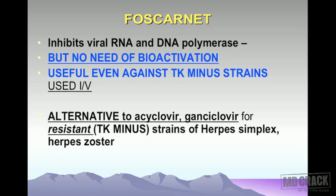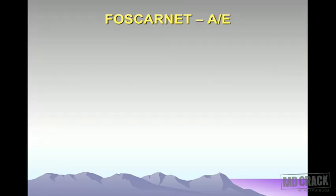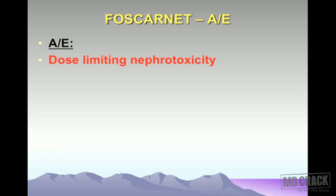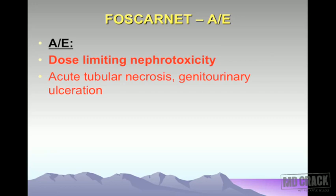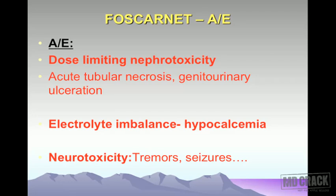Foscarnet is given by intravenous route and is an alternative to acyclovir and ganciclovir for resistant strains — especially TK-minus strains of herpes simplex and herpes zoster. It is also an alternative for CMV retinitis. Adverse effects: foscarnet is nephrotoxic (dose-limiting), can cause acute tubular necrosis, genitourinary ulcerations, electrolyte imbalance, hypocalcemia, and neurotoxicity in the form of tremors and seizures.